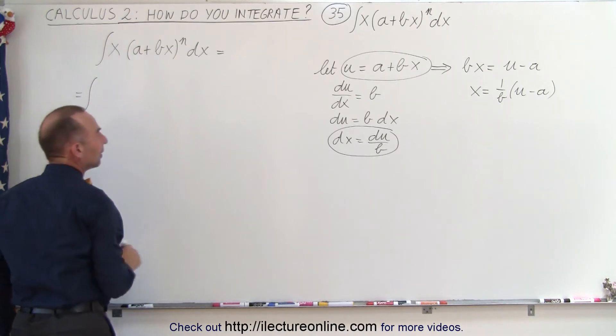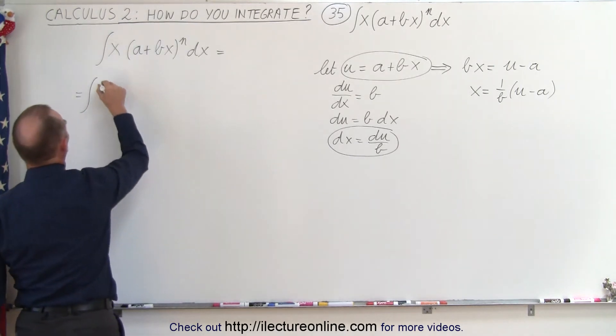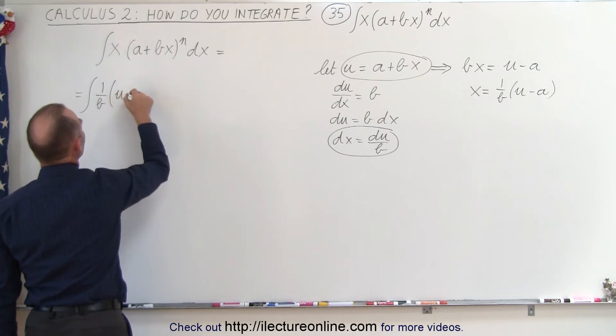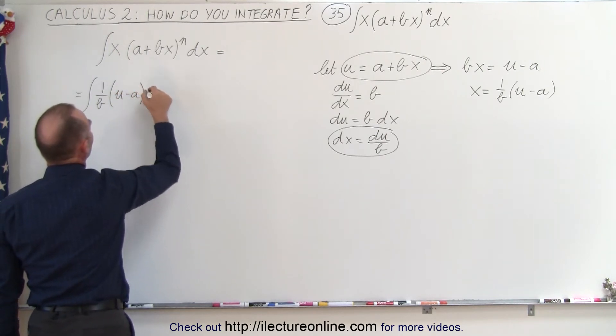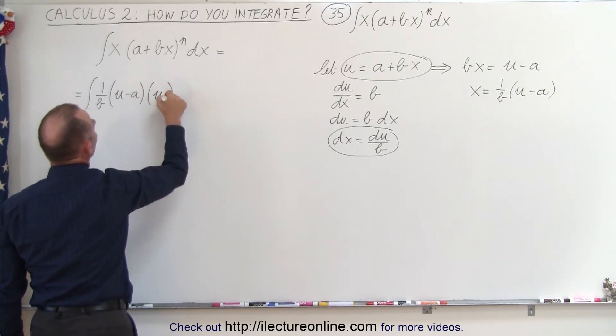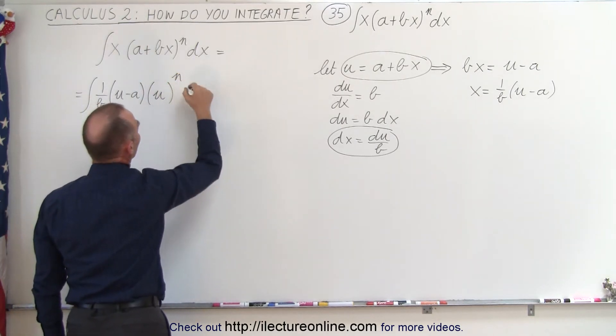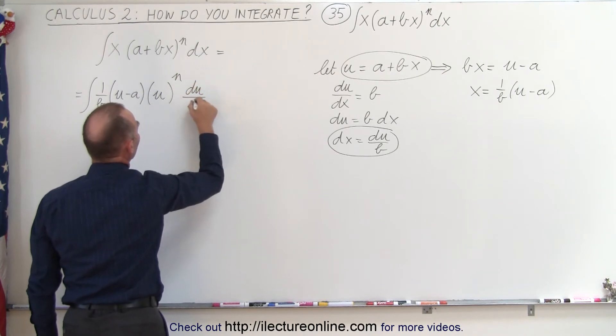This is equal to the integral of 1/b times (u - a) times u to the n power, because a + bx equals u, and instead of dx, we write du divided by b.